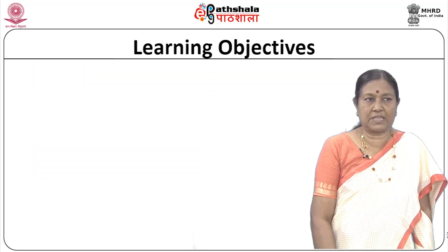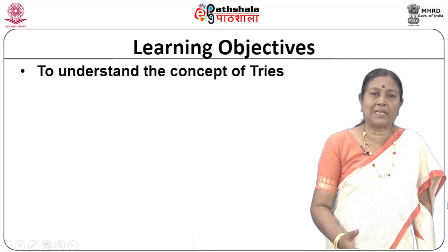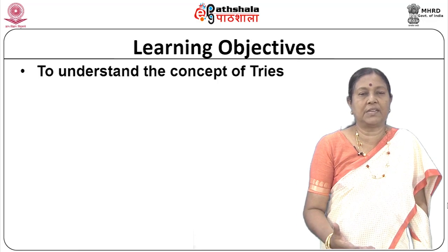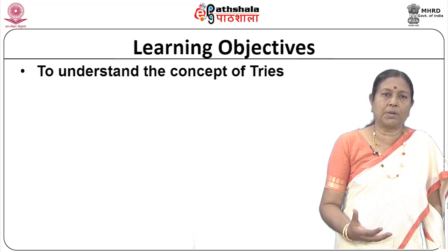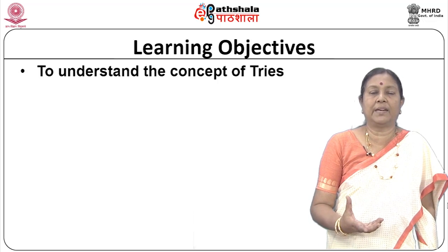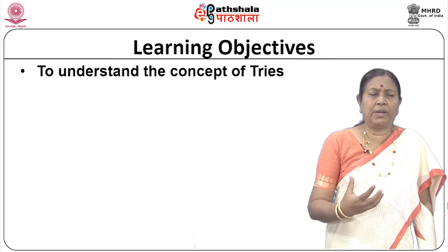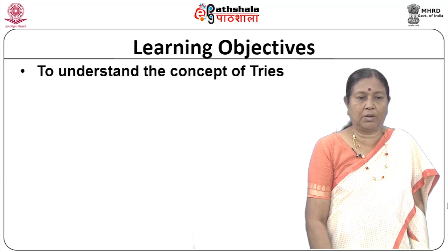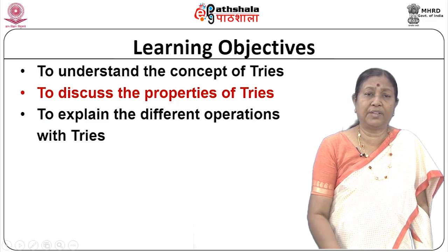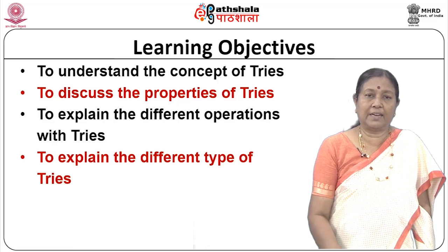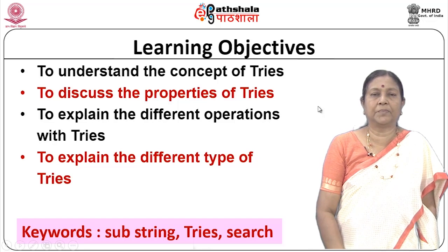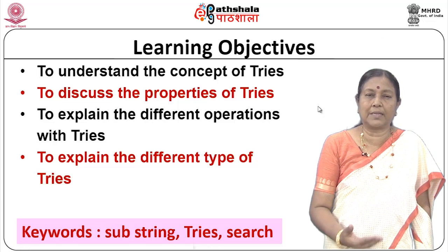Let us first look at the learning objectives of this module. First, we will understand the concept of trie, which is different from ordinary trees. Most trees we have seen are based on searching for an item using the whole key. Here, we do a search based on the prefix of the key. We will then discuss properties of trie, different operations, different types of trie, and terms such as substring and trie.